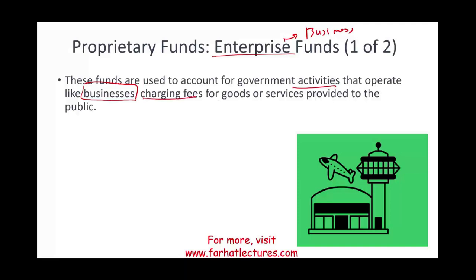Enterprise funds involve charging fees for goods and services provided to the public. In the general fund, the government might provide a service but not in exchange for equal revenue — for example, if there's a fire, they treat it but don't charge people. But if the government is running the airport, for example the Port Authority of Philadelphia runs the airport, that's an enterprise fund — they run it like a business.